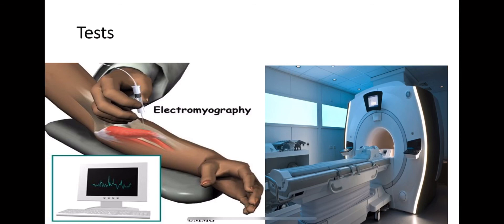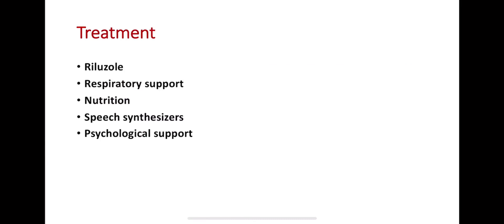Investigations include electromyography, which records muscle and motor unit activity. MRI is also used to assess the brain and spinal cord. These tests help confirm the diagnosis of motor neuron disease.